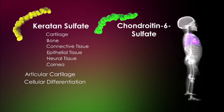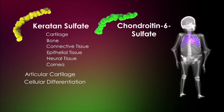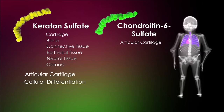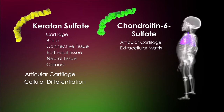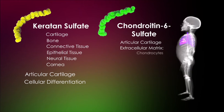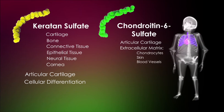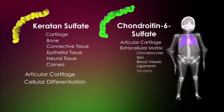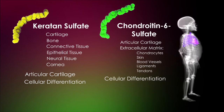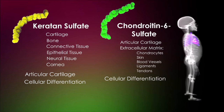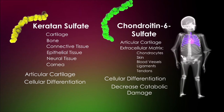Chondroitin-6-sulfate is a major component of articular cartilage and is found in the extracellular matrix surrounding chondrocytes, skin, blood vessels, ligaments, and tendons, where it plays a role in cellular differentiation and in decreasing catabolic damage.